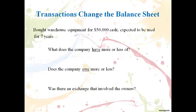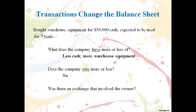Let's talk through another example. The company bought warehouse equipment for $50,000 cash and expected it to be used for seven years. This transaction is also an exchange of one asset for another — cash will decrease and warehouse equipment will increase. There is no change to what is owed since cash was paid, and there was no transaction directly with the owners. Cash will be lower and property, plant, and equipment — warehouse equipment — will be higher on the balance sheet.